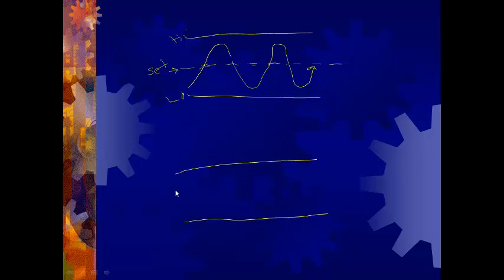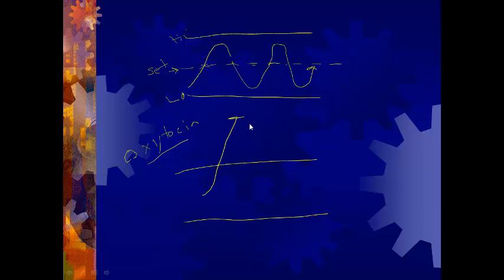One example of positive feedback is labor contractions when a woman is giving birth. The fetus will start to send signals to the woman's brain saying it's ready to be born, and that causes the brain to secrete a hormone called oxytocin. Oxytocin causes contraction of the uterus. As the uterus contracts, that sends more signals to the brain to send more oxytocin — more oxytocin, more contractions, more contractions, more oxytocin. So you go away from set point, and that keeps going until the baby is born. Then it shuts off.